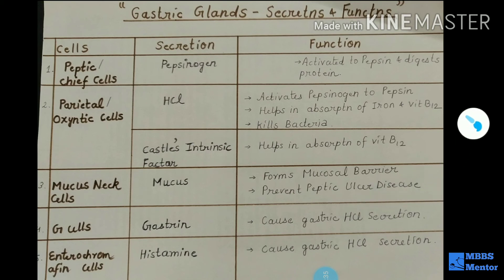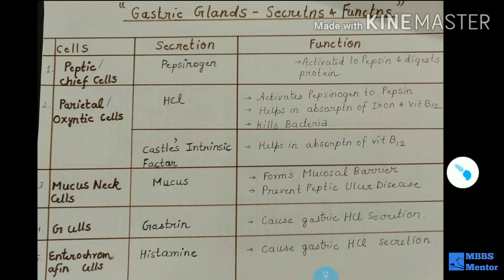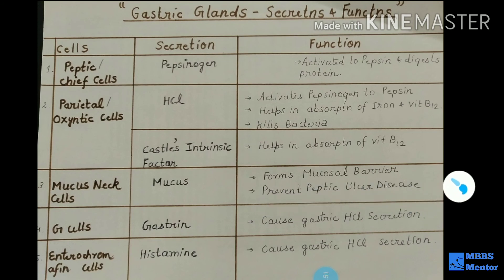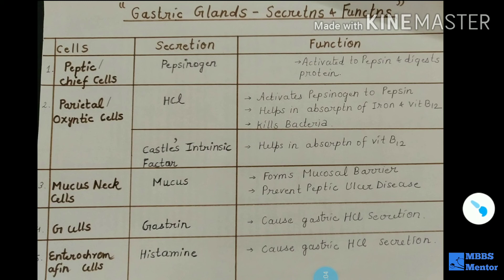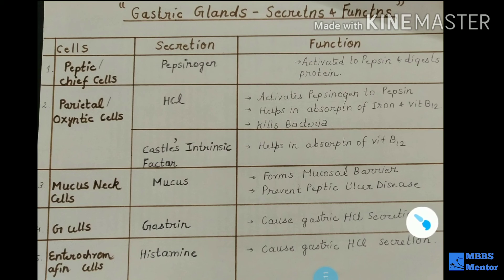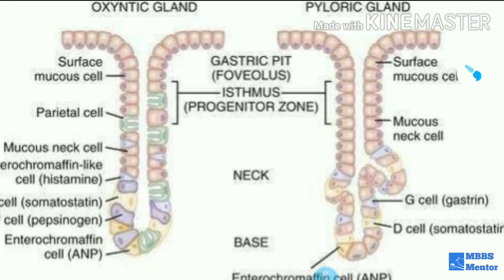The function of mucus is to form the mucosal barrier and prevent peptic ulcer disease. The mucosal barrier is a thick layer of mucus between the stomach lining and stomach fluid. If there is no mucosal barrier, pepsin will digest the wall of the stomach itself, leading to ulcers and eventually death. G cells secrete gastrin, which causes gastric HCL secretion. Enterochromaffin cells secrete histamine, which also helps in gastric HCL secretion.